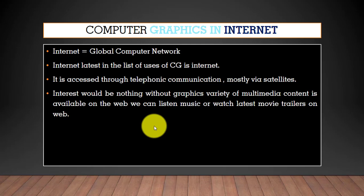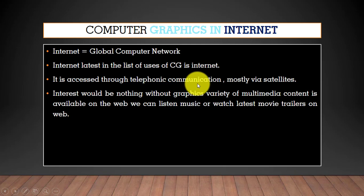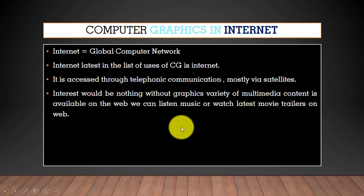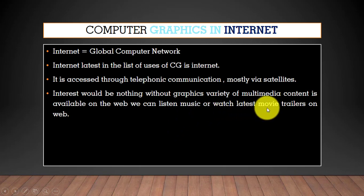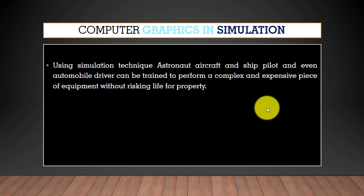The internet is a global computer network accessed through telephonic communication and mostly via satellites. Whatever you see on the internet — music, movies, pictures — these are all multimedia elements, and everything that is not sound or text is computer graphics.